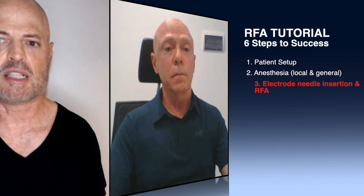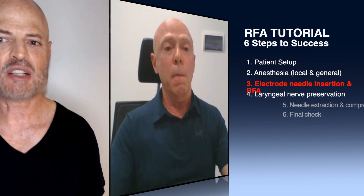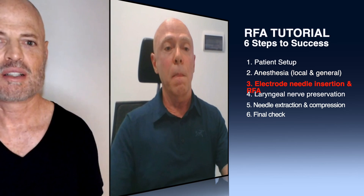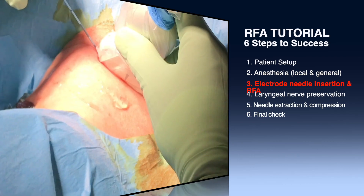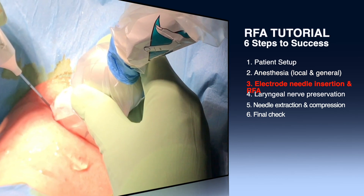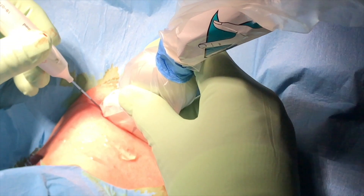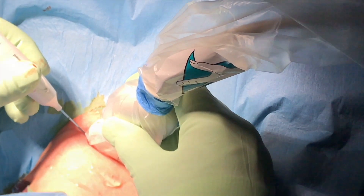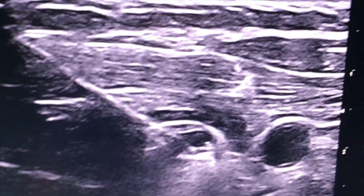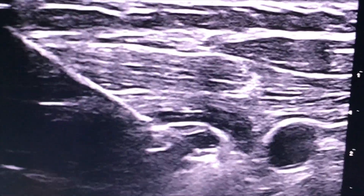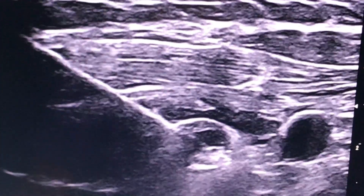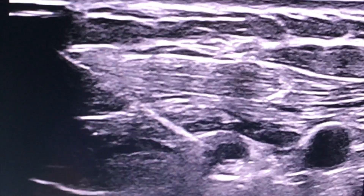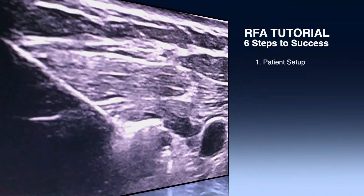So step number one is the patient setup, step number two is preparing for anesthesia, and then step number three is the electrode needle insertion. The insertion is done with a transverse approach, exactly at the point where, previously, local anesthesia has been done. This point is marked with a marker pen.